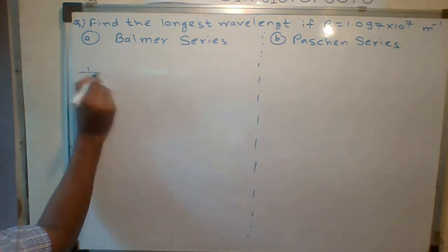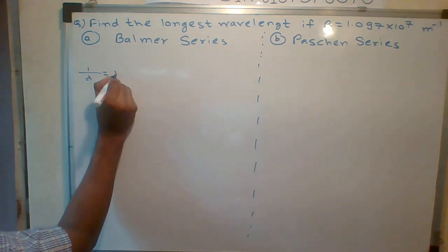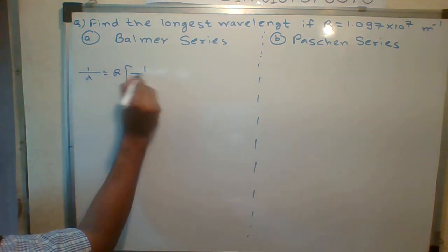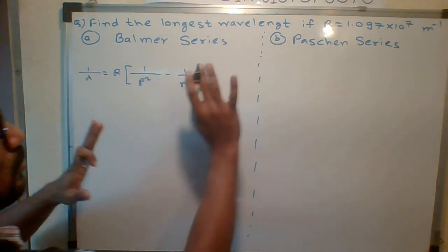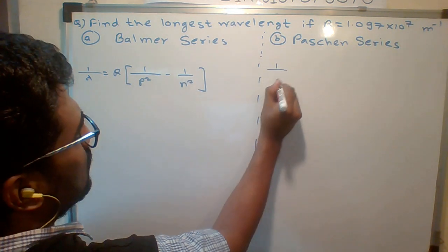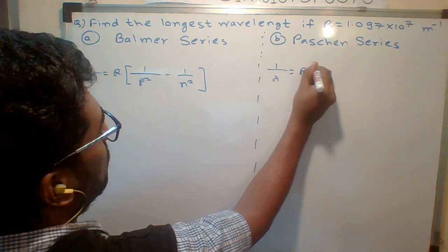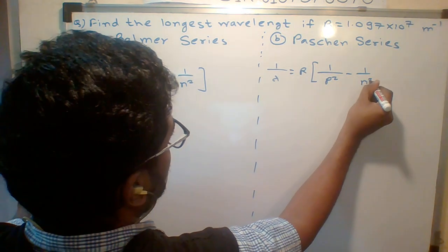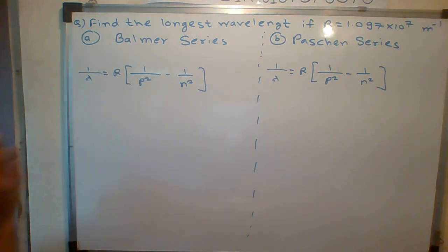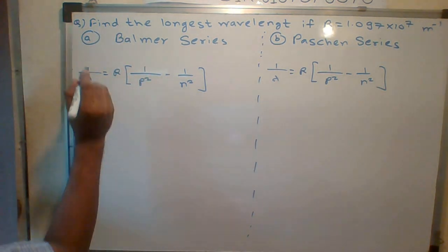The general formula for wavelength is 1/λ = R(1/p² - 1/n²). This is the general formula. For Paschen series, 1/λ = R(1/p² - 1/n²). That is the general formula, but for Balmer series, as I told you...